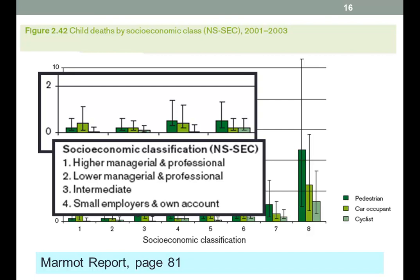These are higher management, lower management professionals, intermediates, small employers, and own account owners. So pedestrian deaths are relatively low — probably because many more of these children are driven around by cars. Cycling deaths are a bit higher, and car occupant deaths a little bit higher.